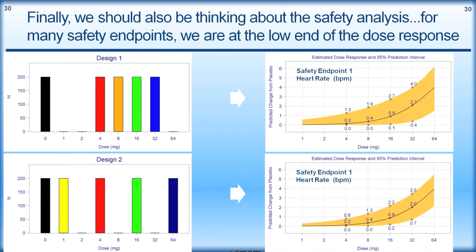We also need to think about safety analysis. Phase II studies have safety endpoints we're equally interested in predicting for Phase III. Looking at the low end of the dose-response curve - for example heart rate as a safety endpoint - we see an increase in effect, and with a better design we achieve more precise estimates of the size of the treatment effect for safety as well as efficacy.